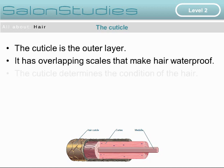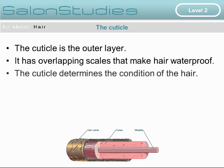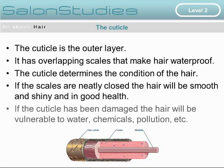The different parts of the hair. The cuticle is the outer layer of the hair. It has overlapping scales that make the hair waterproof. The cuticle determines the condition of the hair, and if the scales are neatly closed, the hair will be smooth and shiny and in good condition. If the cuticle has been damaged, the hair will be vulnerable to water getting in, or chemicals and pollution.